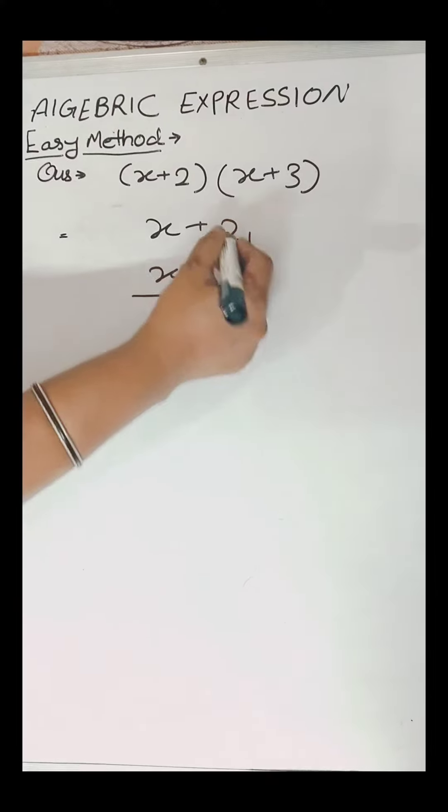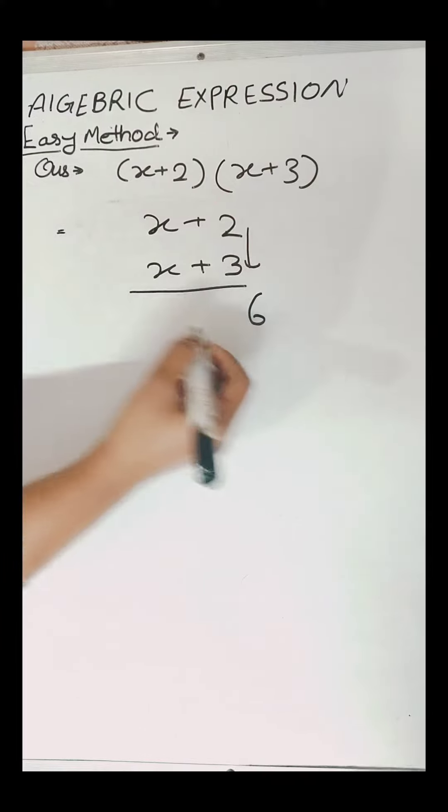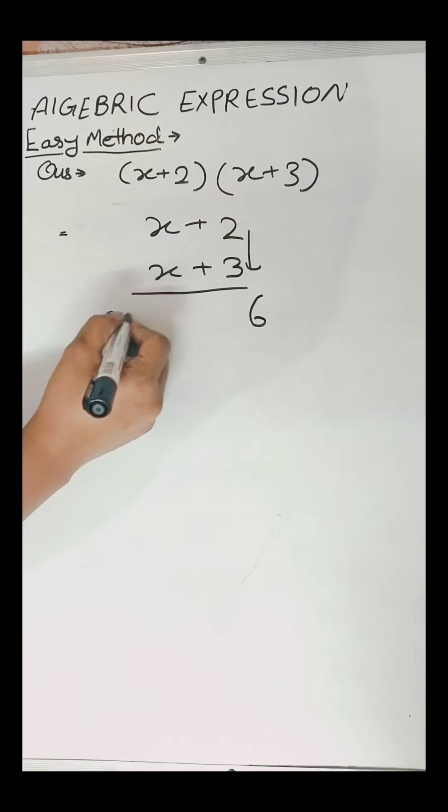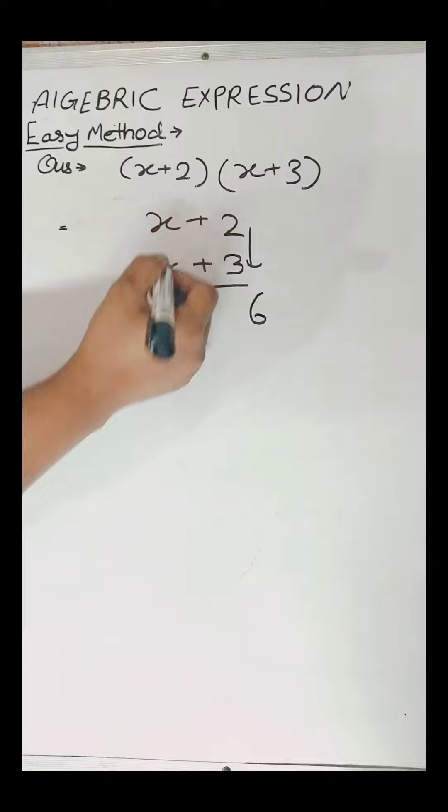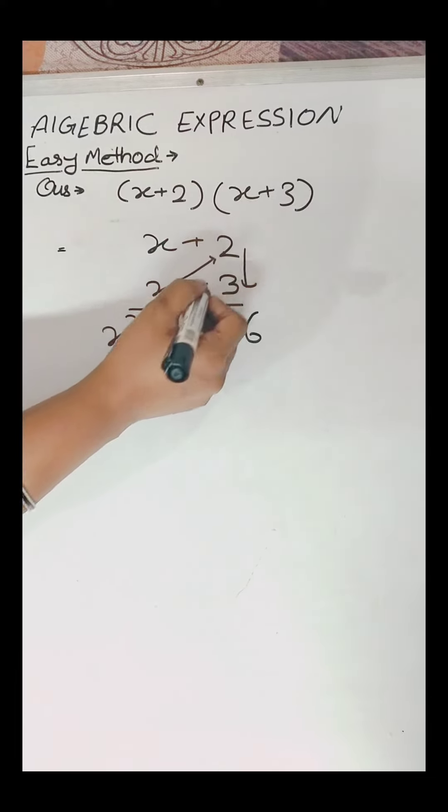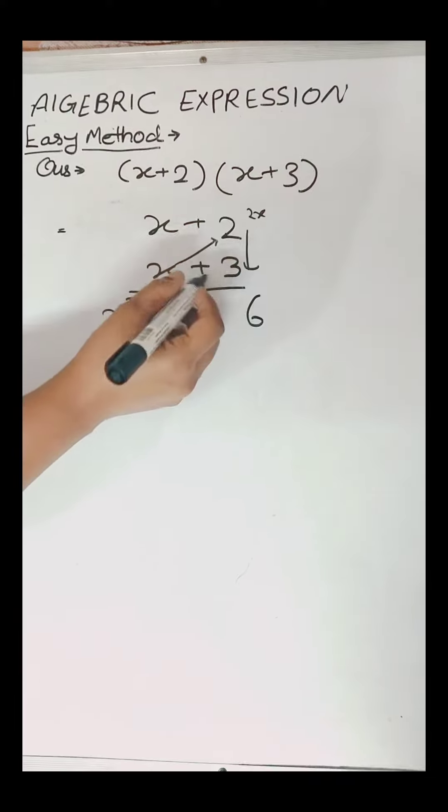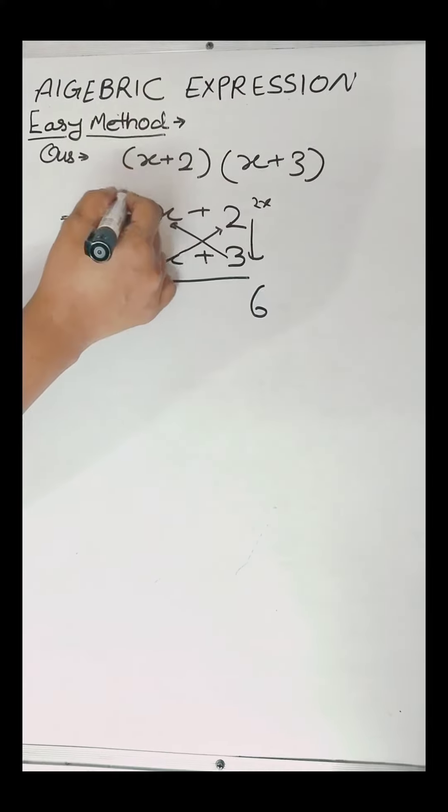Firstly we will multiply 3 and 2, which is equal to 6, and x and x, which is equal to x square. Now we will multiply x by 2 and x by 3. We can say we have cross multiplied them, so we will get 3x and 2x.